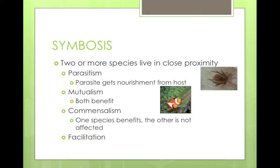Facultative mutualism is when both species can survive alone, but they still benefit from each other. For example, the acacia plant has a relationship with ants — the ants defend the acacia plant by stinging anything that tries to eat it.